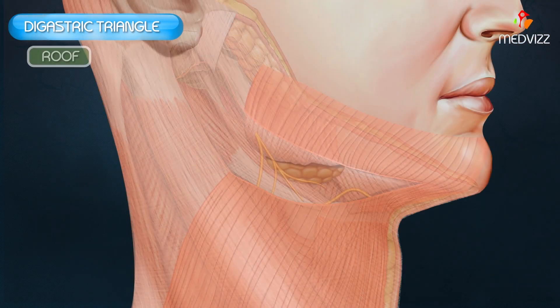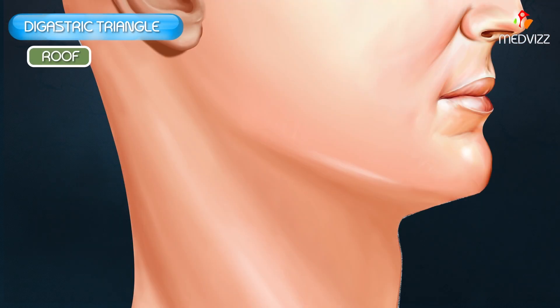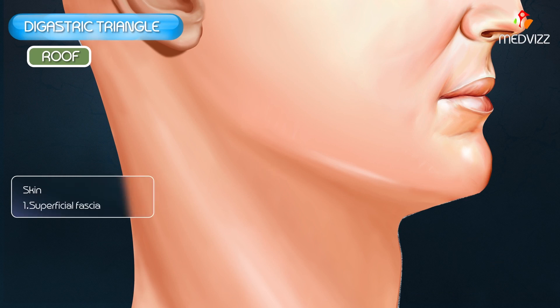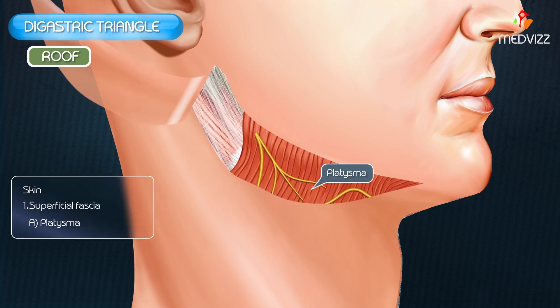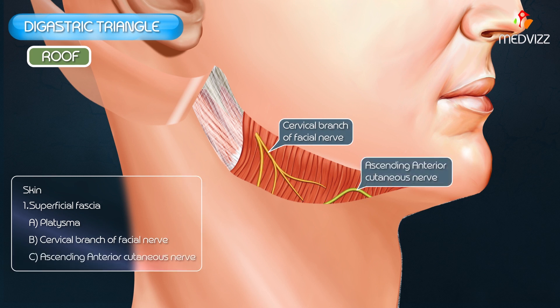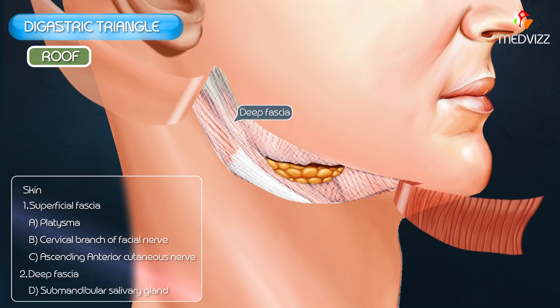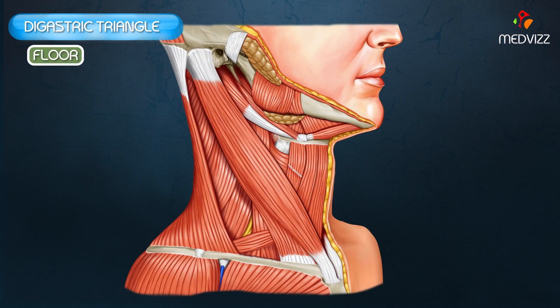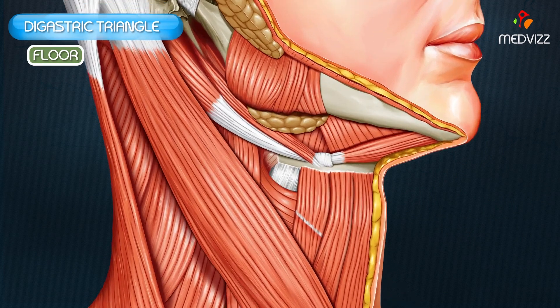The roof of the digastric triangle is formed by the following structures: skin, superficial fascia containing platysma, the cervical branch of the facial nerve, the ascending branch of the transverse or anterior cutaneous nerve of the neck, and finally the deep fascia which splits to enclose the submandibular salivary glands.